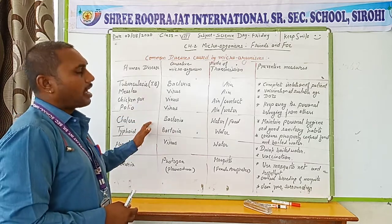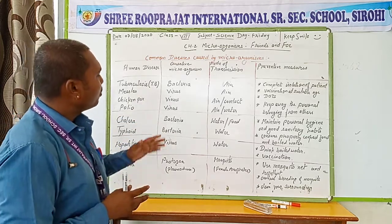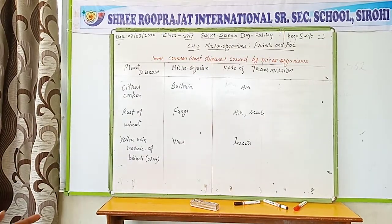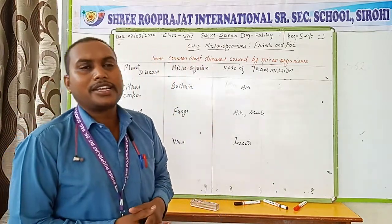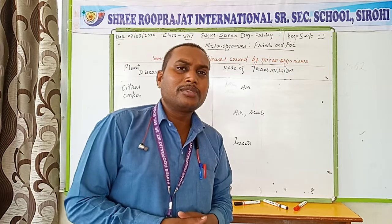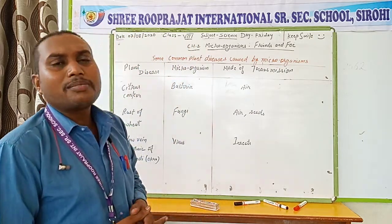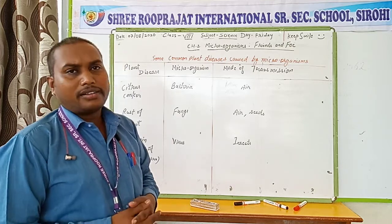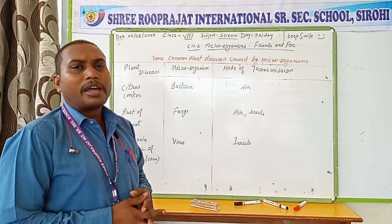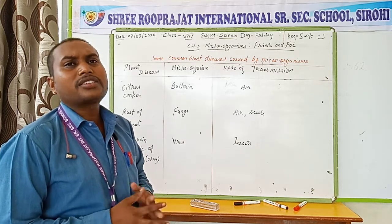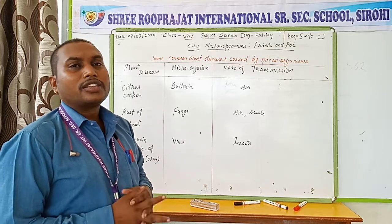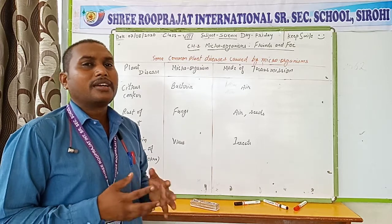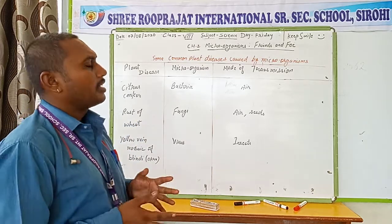The microorganisms which cause diseases in animals are known as animal microorganisms. For example, anthrax is a microorganism which causes the anthrax disease in human beings and animals. In affected cattle, the nostrils burst and blood comes out, and the animal can even die due to this disease.